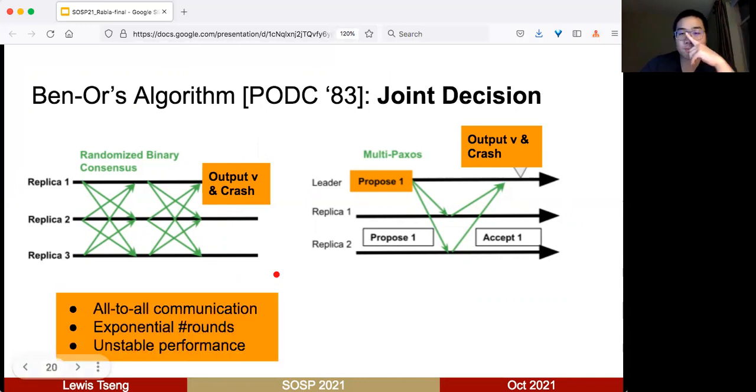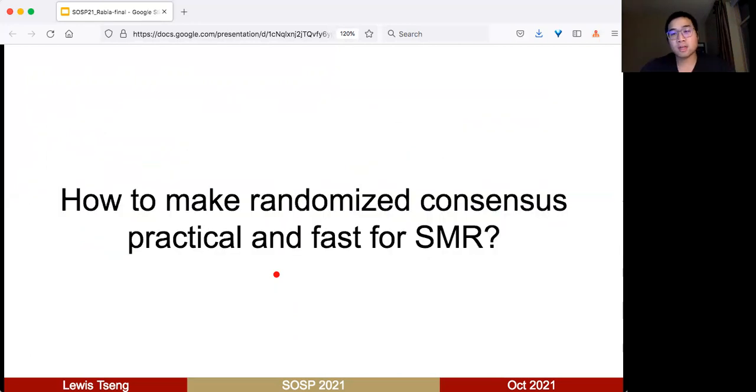But of course, Ben-Or's algorithm still has lots of downsides. First, it's all-to-all communication and has an exponential number of rounds. Because it's a randomized protocol, the rule is not very stable and has unstable performance. I would say the contribution of this work, Rabia, is how to make randomization practical and fast for the case of SMR.